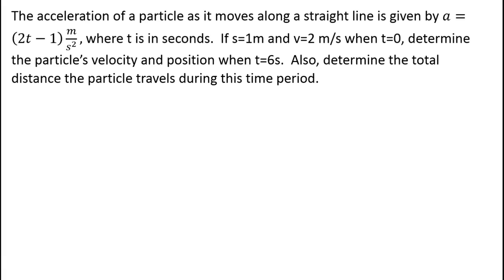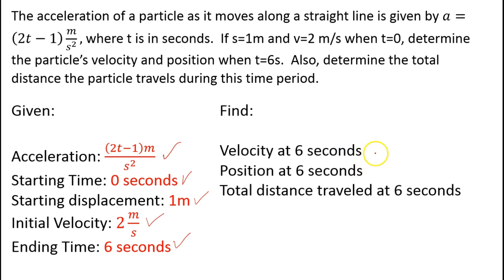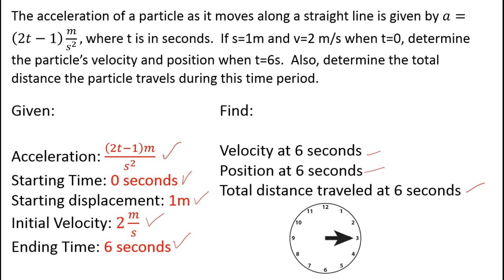So let's get what we have given and what we're really trying to find. We have the acceleration, a starting time of 0 seconds, a starting displacement of 1 meter, an initial velocity at 0 seconds of 2 meters per second, and a time frame of 6 seconds — so framed over a period from 0 to 6 seconds. We're trying to find three things: the velocity at 6 seconds, the position at 6 seconds, and the total distance traveled during that 6-second window.